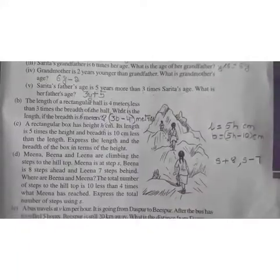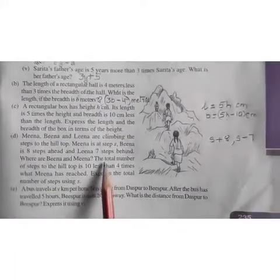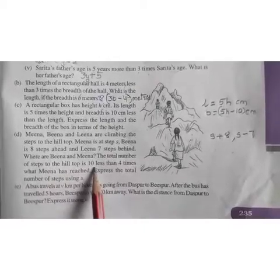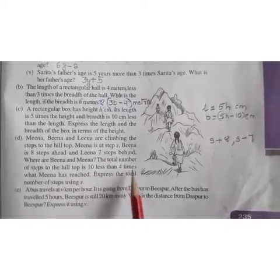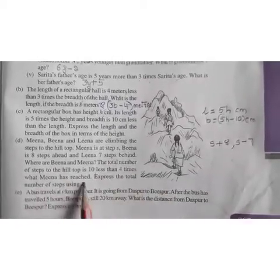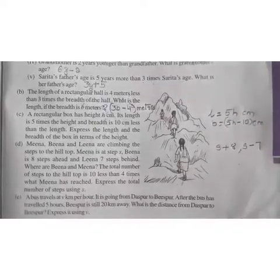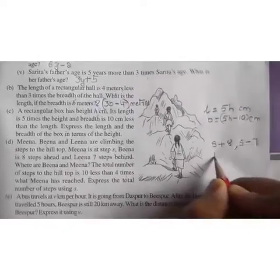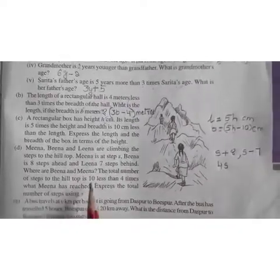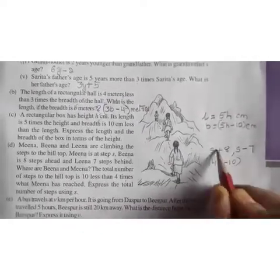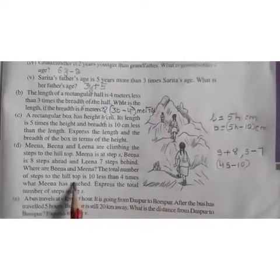Next we have the total number of steps to the hilltop is 10 less than 4 times what Mina has reached. Mina is at S. 4 times Mina means it will be 4 into S, that's 4S, and 10 less. So it becomes minus 10. So these are the 3 expressions in question number D.